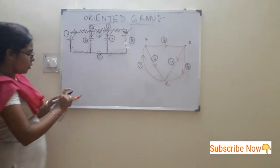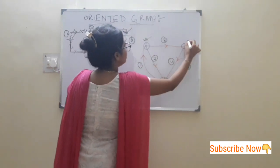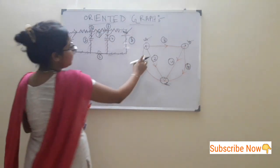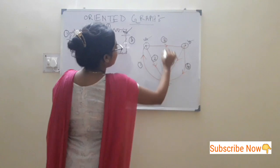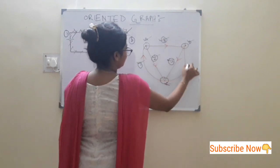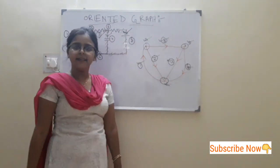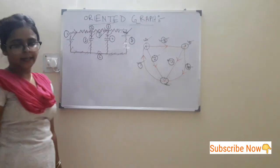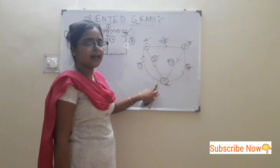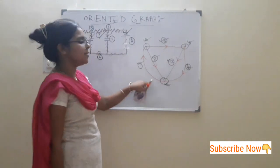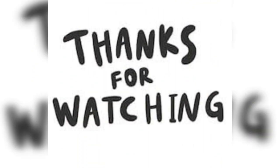In this graph, all the nodes are named, all the branches are numbered — like 1, 2, 3, 4, and 5 — and all the branches are assigned the orientation given in our electrical circuit. So we can tell this is an oriented graph of this electrical circuit. Thank you.